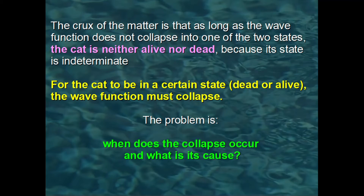The crux of the matter is that as long as the wave function does not collapse into one of the two states, the cat is neither alive nor dead, because its state is indeterminate, just as the state of the atom is indeterminate. The meaning of the paradox is precisely to show that if the Schrödinger equation is always valid for the evolution of the wave function, we inevitably arrive at a situation in which the cat must necessarily be neither alive nor dead. The indeterminate state of the cat is often described by saying the cat must be both alive and dead at the same time. Actually, this is a nonsensical expression, because the wave function represents two possibilities, and not two realities. For this reason, it is said that quantum mechanics does not describe reality as something existing, but is a set of potentialities that become real only in the moment of observation.